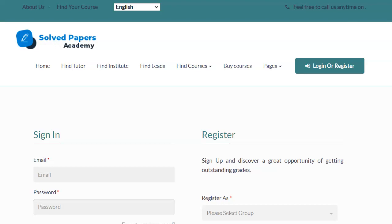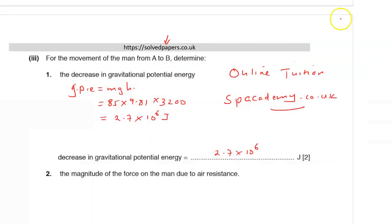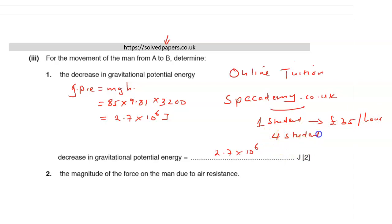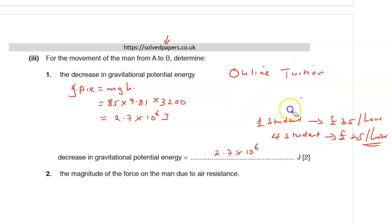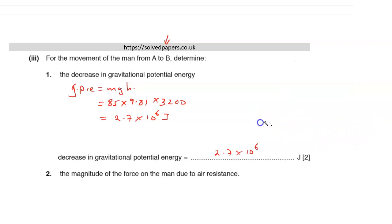I guarantee you will achieve a great grade that will open university doors for you. For one-on-one sessions, I charge a fair price of 35 pounds per hour; two hours would be 70 pounds. If you bring two or three friends so there are four in the class, I'll give you a discounted rate of 25 pounds per hour. Talk it over with your parents and join me in class.